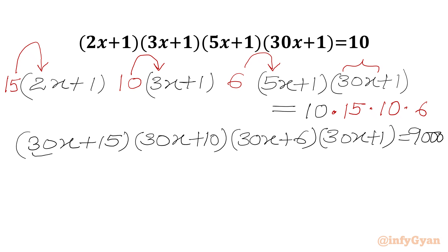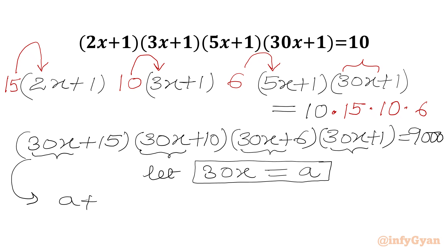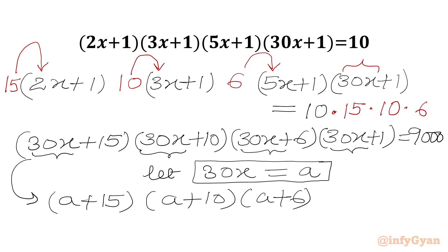Now we have 30x appearing in all four brackets. So let us say 30x = A. We will get our equation in variable A: (A+15)(A+10)(A+6)(A+1) = 9000.